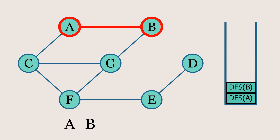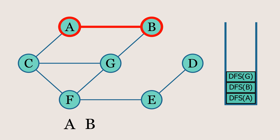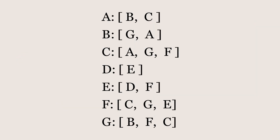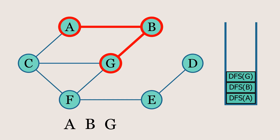Node B also has two neighbors, but since we've already visited A, we'll move on to the next neighbor, which is G. Node G also has two unvisited neighbors. According to the order in the adjacency list, node F comes first, so we'll proceed to F from here.